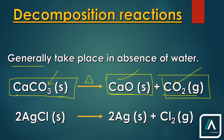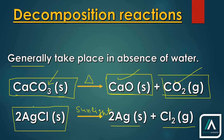The next example is the decomposition of silver chloride, which takes place in the presence of sunlight. With the help of sunlight, silver chloride breaks down into silver metal and chlorine. Silver chloride is a salt, so it is going to be solid. Silver is a metal, so it is also solid. And chlorine is a gas.